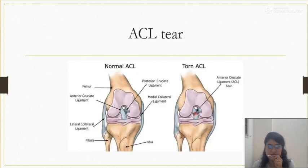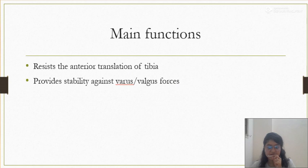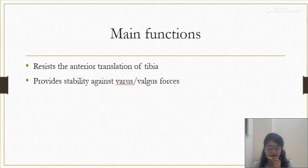This is a picture of the torn ACL which you can see. What is the mechanism of injury for ACL tear? ACL is prone to tear during hyperextension or during valgus forces while falling, during a road traffic accident, or while playing a game. It is more common in athletes but is also common in the non-athletic population.